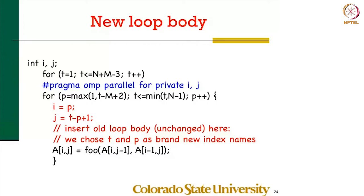So here's what I have. I had the T loop for T equals 1 to N plus M minus 3, T++. I have my parallel pragma, and then I have the bounds on P, the loop on P that I had generated. I say I equals P, J equals T minus P plus 1, and I insert verbatim the old loop body.